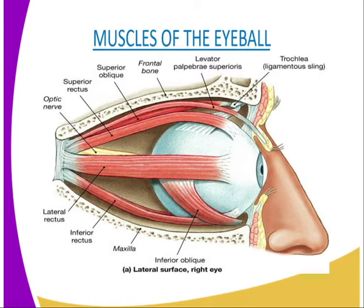The eye is located in a socket in the skull called the orbit, which offers protection against physical damage. Within the orbit, there is a fatty layer lining which provides further protection as a shock absorber against mechanical injury. In the socket, the eye is suspended by a set of muscles which move the eye.